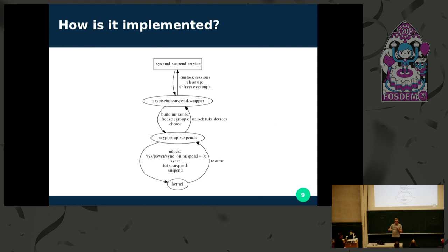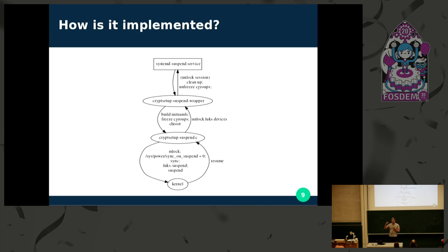Going back into the details: the kernel has suspended, and now we wake it up afterwards. It resumes and gives back power to the process that was running before suspend. In this binary, we unlock all the devices that we locked before. We go back out to the wrapper and basically we just reverse everything that we did before. We even unlock your GDM session or similar.